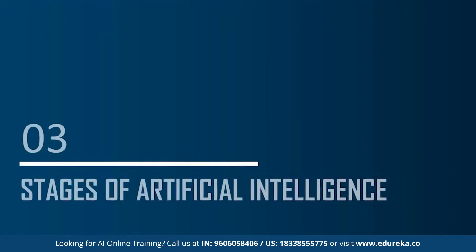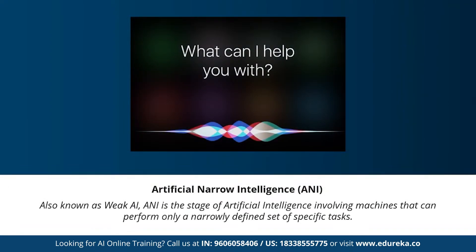Now let's understand the different stages of artificial intelligence. Many videos and articles state that artificial general intelligence, artificial narrow intelligence, and artificial super intelligence are types of AI — but to be precise, these are actually the three different stages of AI, which are completely different from the types of AI.